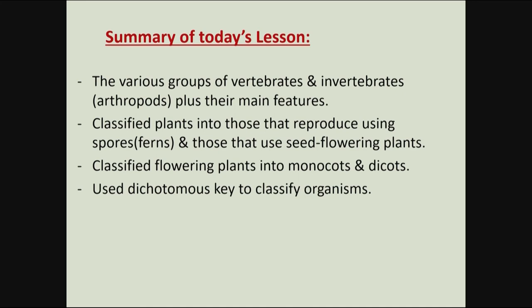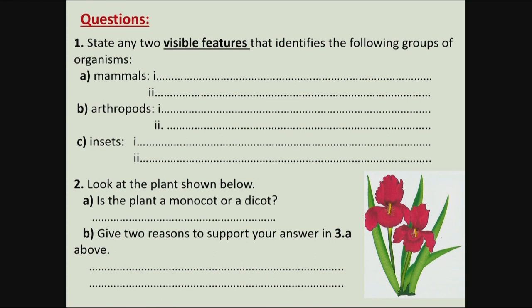To summarize today's lesson: we've looked at the various groups of vertebrates and invertebrates. We also classified plants into those that reproduce using spores, like fern plants, and those that reproduce using seeds, like flowering plants. We classified flowering plants into monocots and dicots, and we used the dichotomous key to classify certain organisms. I have a set of questions for you — you can take pictures of these slides or record them, try out the questions, and I'll give you the answers in the next lesson.